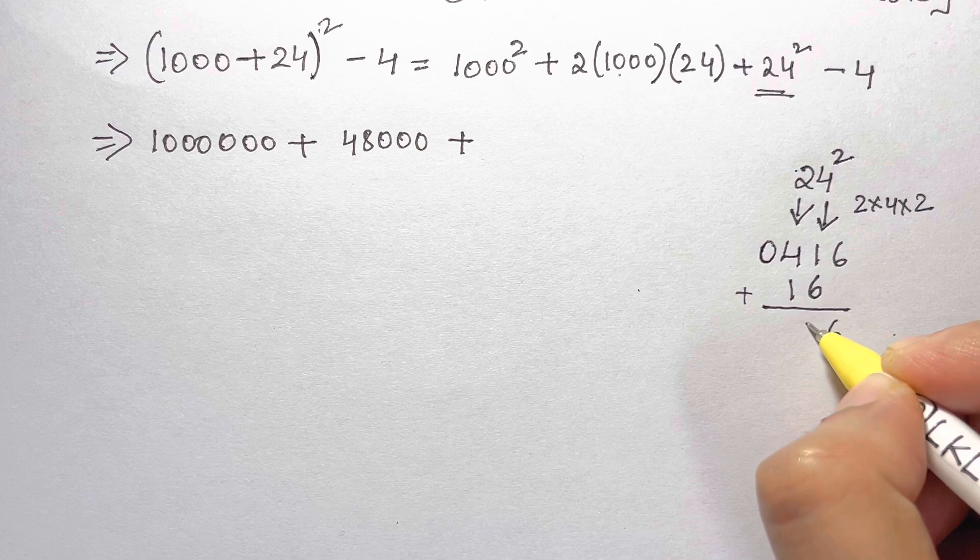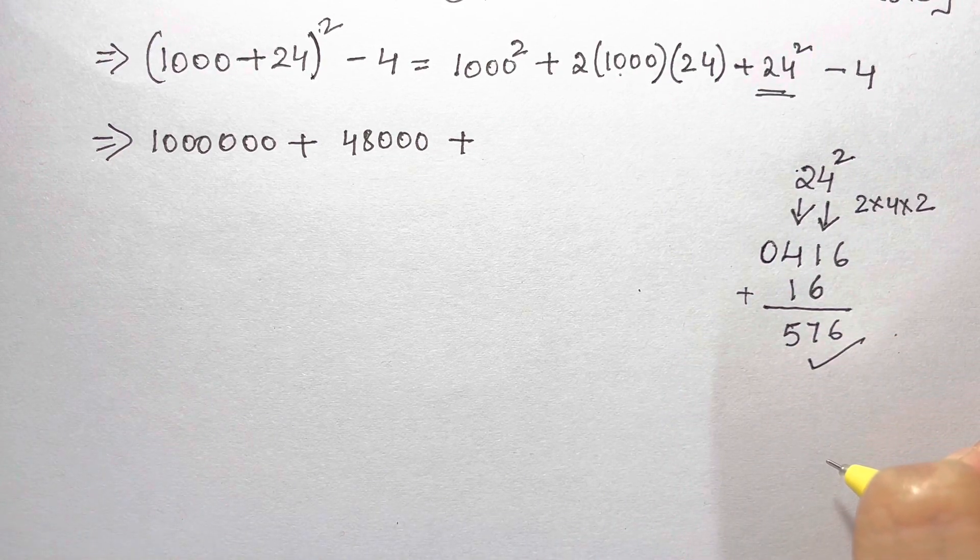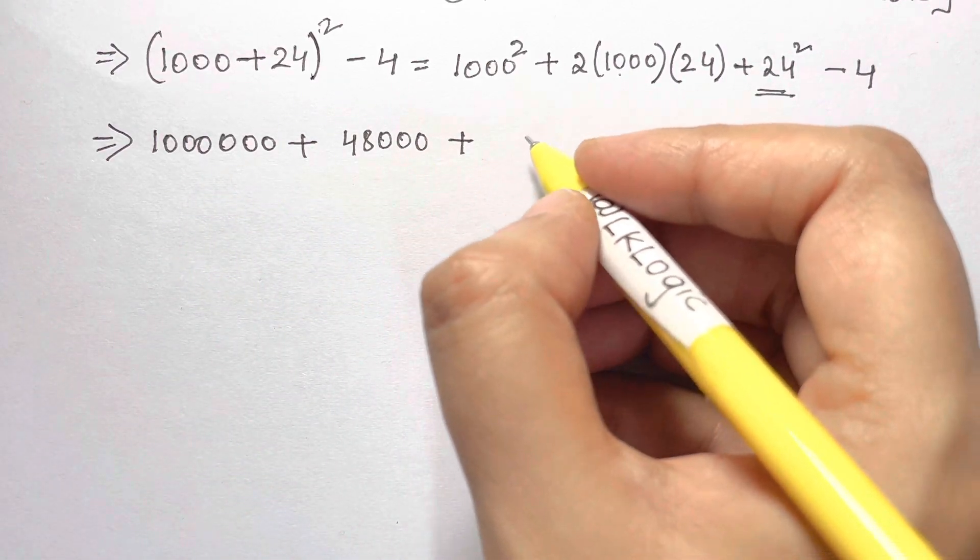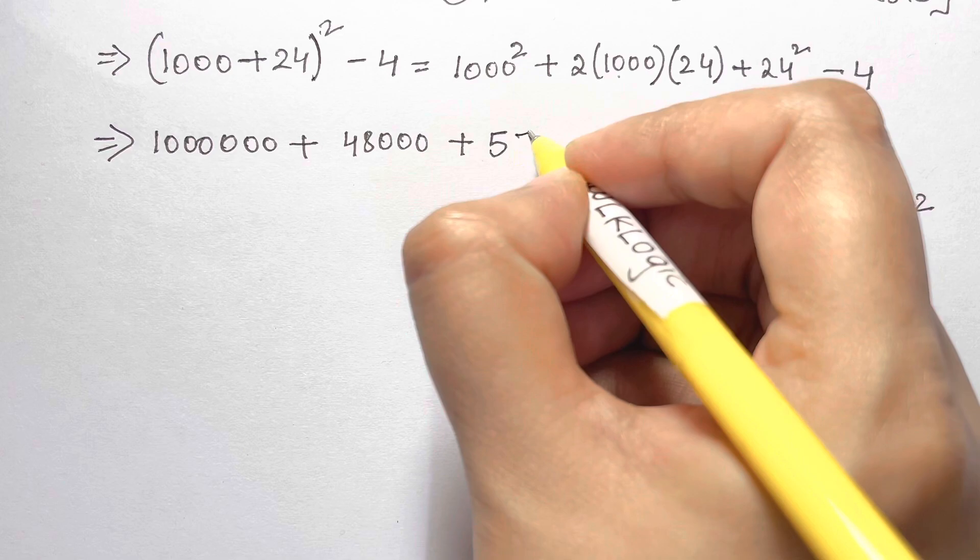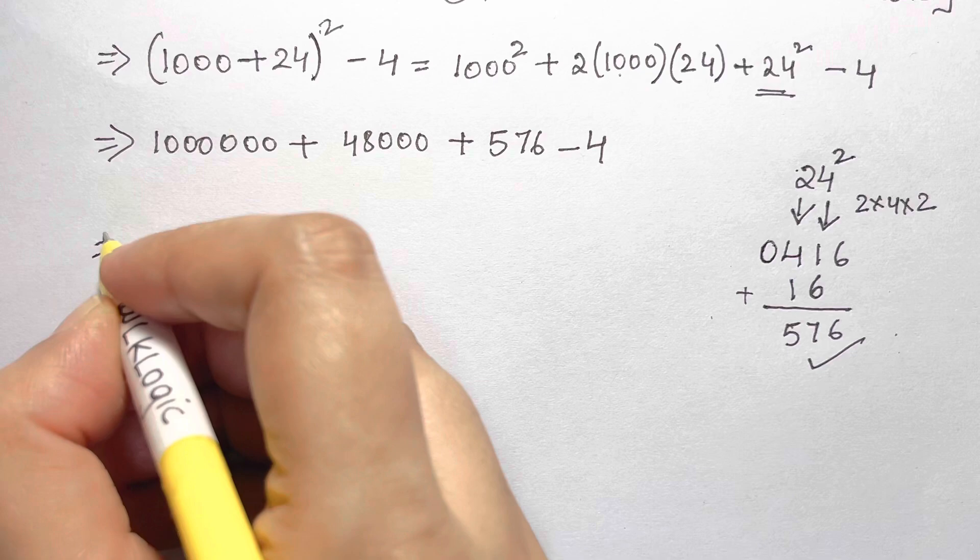And now just add them up: 6, 6 plus 1 is 7, 4 plus 1 is 5, and that's your answer. 576 is the square of 24. So we are going to write that plus 576 minus 4.